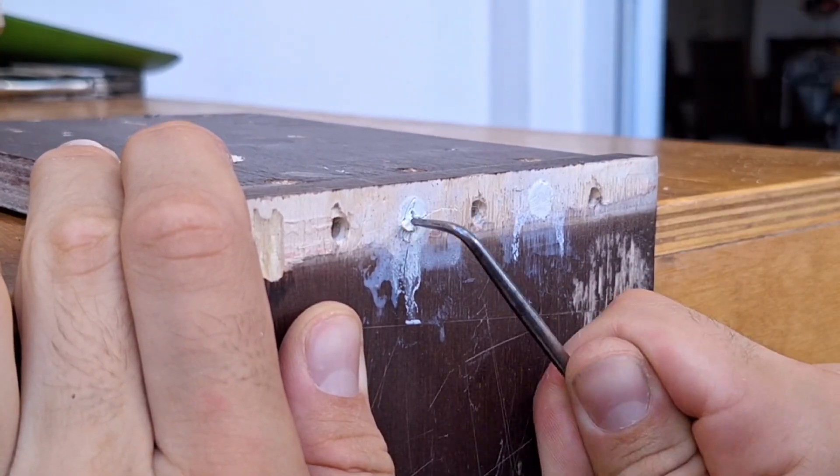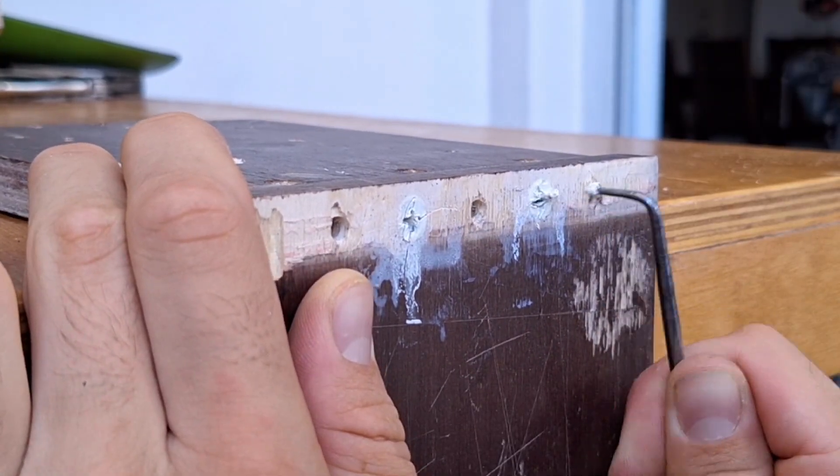The engineer's scriber is the perfect tool for removing wood filler from screw heads for reusing lumber.